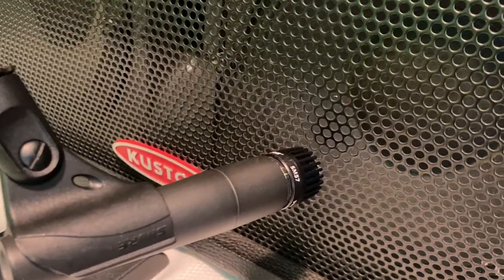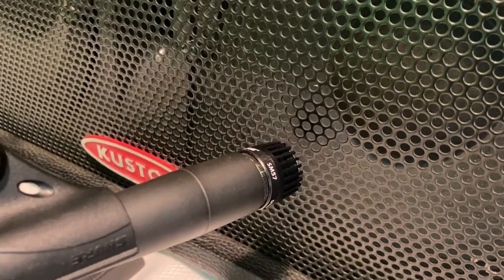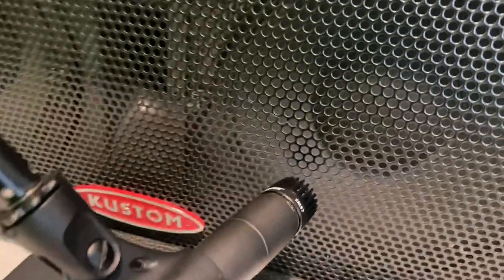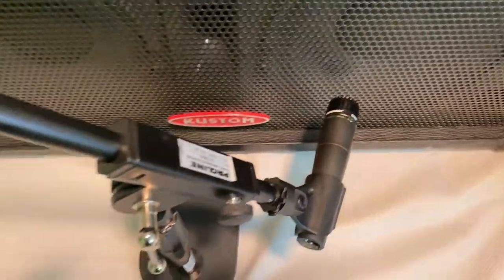Similar to the SM58, the SM57 is a great workhorse microphone, live or in the studio. Excellent for capturing virtually any instrument or sound source. Especially suitable for close micing of an instrument or an amp or speaker.